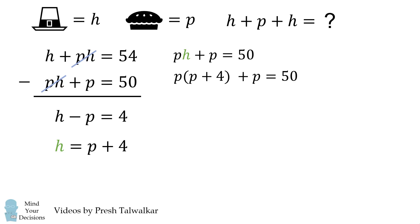We have P plus 4 terms of P and we have one more term of P. So in all we have P plus 5 terms of P. So the equation simplifies to be P times the quantity P plus 5 is equal to 50.